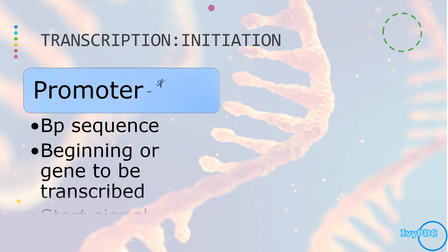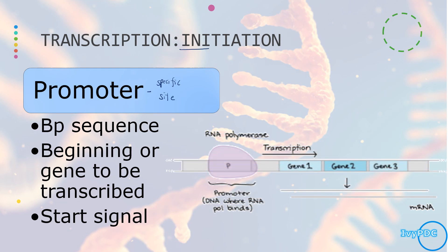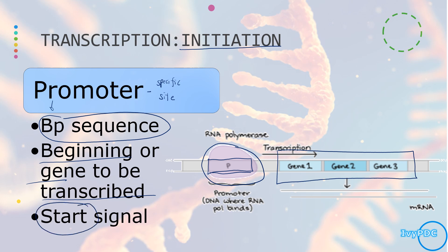The promoter is a specific site in a DNA sequence where initiation should begin. It is made up of base pair sequences located at the beginning of the gene to be transcribed — upstream or before those genes. The RNA polymerase binds to this promoter region, which gives the signal indicating where transcription should begin.